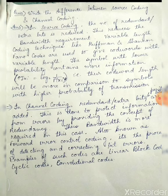Source encoding basically removes the redundant bits, which further reduces the bandwidth requirement. Now, channel encoding is done by the channel encoder. In the channel encoder, additional bits — also called parity bits, check bits, or redundant bits — are added to the source code word. The channel encoder adds redundant bits to give the capability of error correction to the codes. When redundant bits are introduced, the probability of occurrence of errors is reduced.